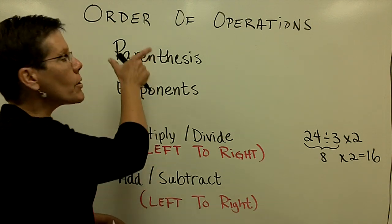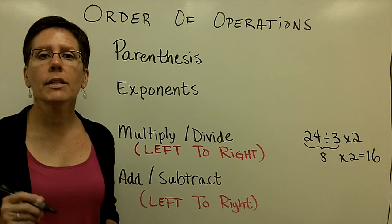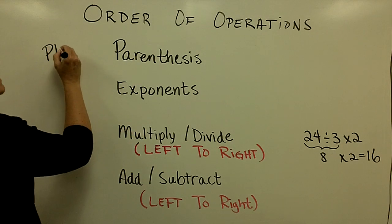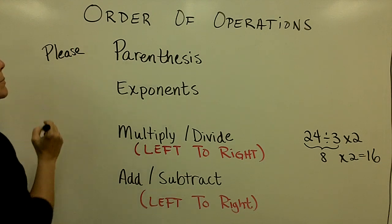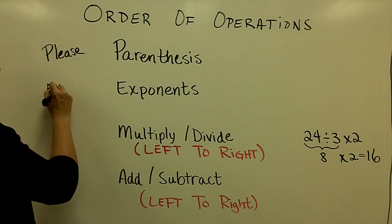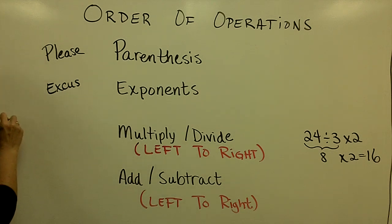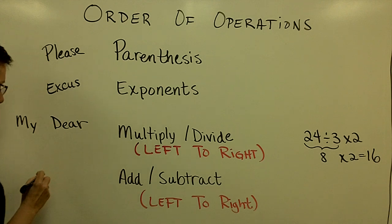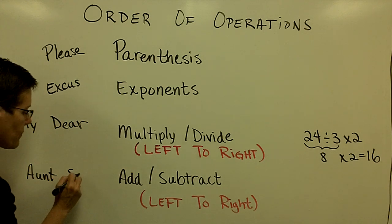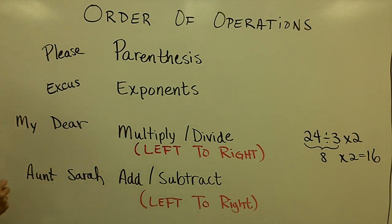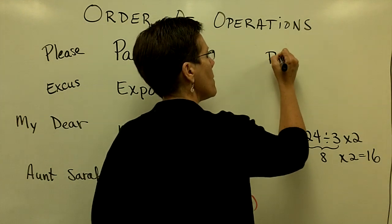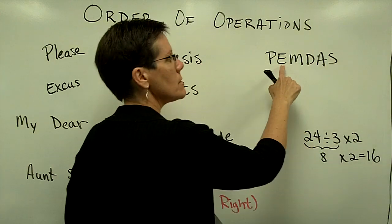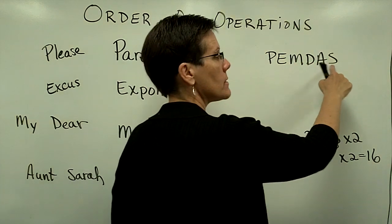Some people remember this order of operations by the sentence 'Please Excuse My Dear Aunt Sally.' The P in 'please' goes along with the P in parentheses. The E in 'excuse' goes along with the E in exponents. 'My Dear Aunt Sally' covers multiply, divide, add, subtract. Some people also use the phrase PEMDAS: Parentheses, Exponents, Multiply, Divide, Add, Subtract.